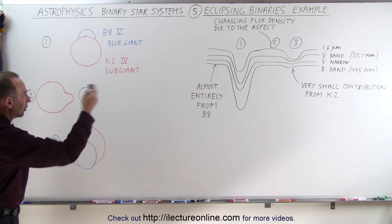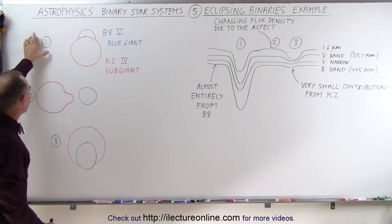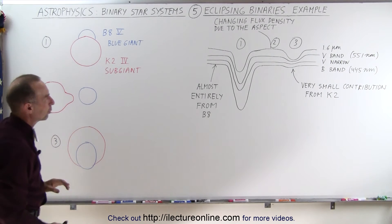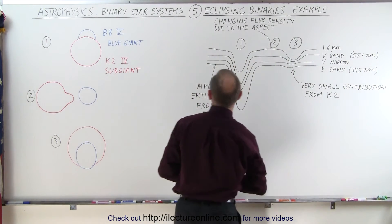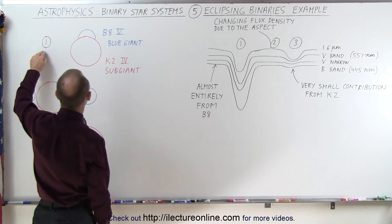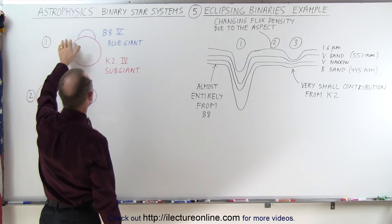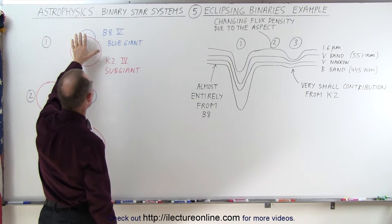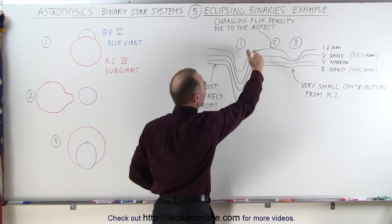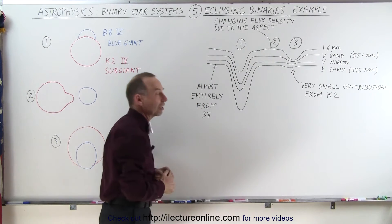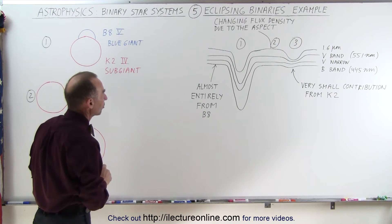If we now look at the curves, can we make sense of what we see? Here we have situations 1, 2, and 3, which are denoted on the graph. Notice in section 1, when the red subgiant primarily covers up a large portion of the blue giant, we see a very large depression of the flux density curve, because the blue giant contributes most of the light from the star system.